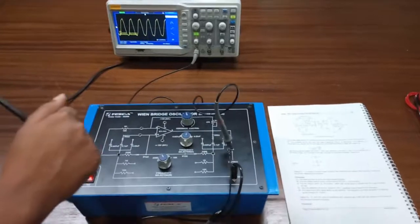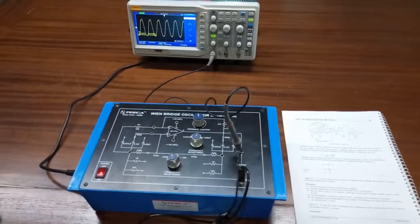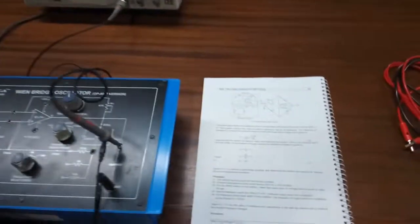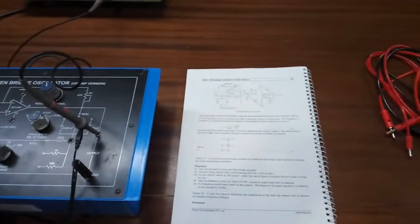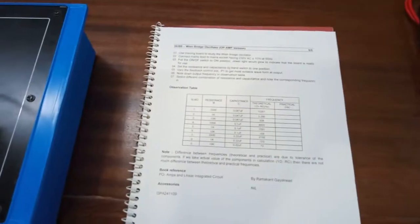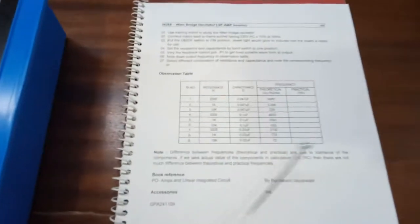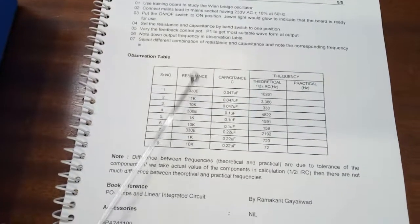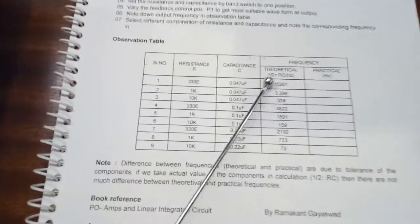Our next experiment is to vary the value of resistance and capacitors in the lead-lag network and to observe the resultant frequency changes. Here in this experiment there is an observation table for resistance and capacitors and the frequency calculated theoretically.